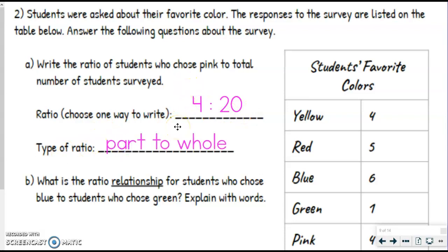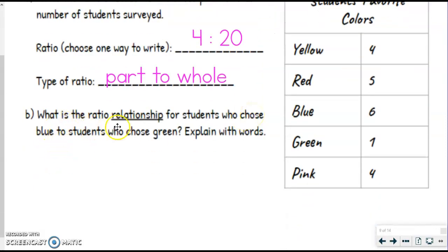And the type of ratio, this would be a part to whole, because part was the students who chose pink, 20 was the total. So now they want us to write the ratio relationships. Remember that was the for every, there are, or there is that we were using last time.